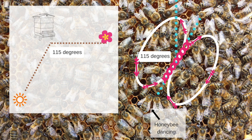Looking at the bees, with the top of the frame at the top of the screen, she dances at an angle that matches the angle between the sun and the location of the forage. She waggles her abdomen depending on the distance to the forage and performs a circular motion in a figure of eight. This transmits the information to the other workers who then decide whether or not to go to that location. That's the basic idea of how the waggle dance is performed and what it means.